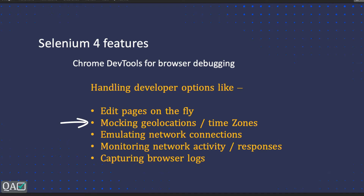The same concept applies to time zones. There are applications that behave differently based on time — for instance, showing day or night mode, or calculating based on current timing. In that case you need to emulate the time zone to validate your application's functionality. You cannot go to different locations or place an automation analyst in each location to verify. Instead, you can emulate or mock that particular location and validate whether the application is reacting properly.